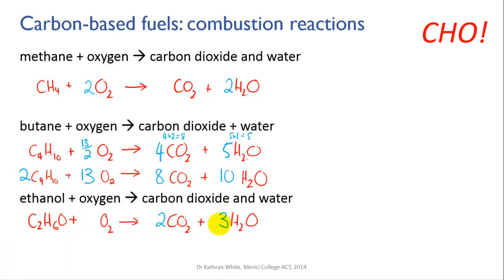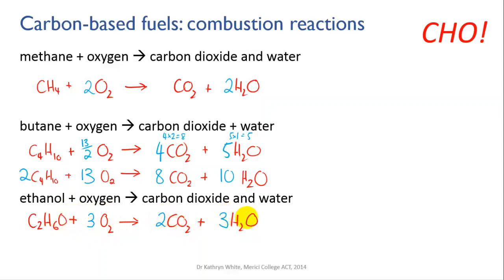Carbons first: two carbons on the left, so we need two on the right. Six hydrogens on the left, so we need three water molecules to use up those six. For oxygens on the left, we have two from the oxygen molecule but don't forget there's also one in the ethanol, so we actually have three on the left. On the right we've got two times two is four, plus three is seven altogether. We need to get seven oxygen atoms on the left: one comes from the ethanol, leaving six, which we get from three oxygen molecules. Final check: two carbons each side; six hydrogens on the left, three times two is six on the right; three times two oxygens plus one is seven, and two times two plus three is also seven.